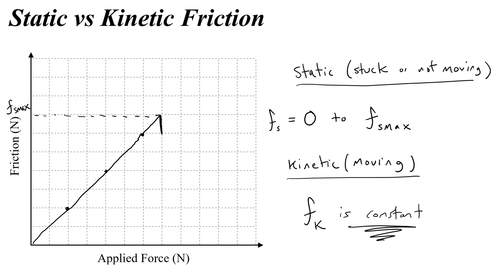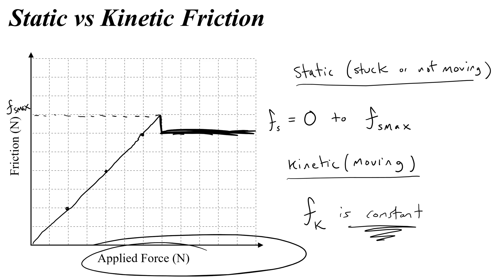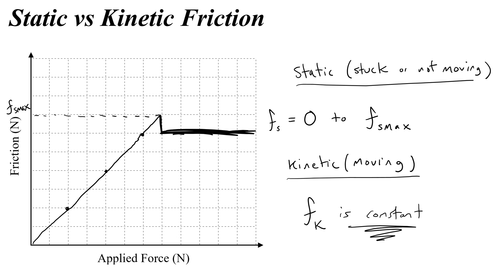Let's draw kinetic friction on our graph: a constant force of friction no matter how much applied force you add — no matter how hard you push, it remains constant. On this graph we label the static section and then the kinetic section where the object is moving. Now let's solve some example problems with this idea of static versus kinetic friction.